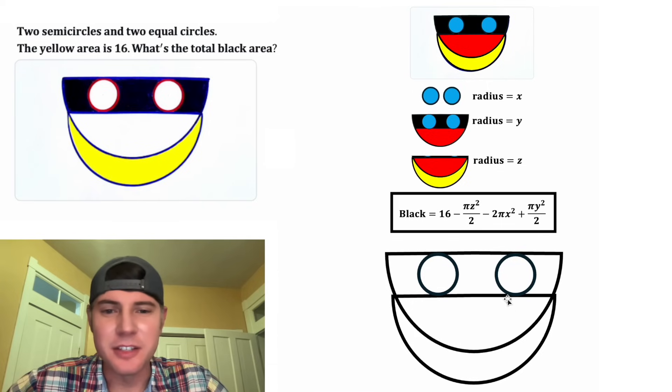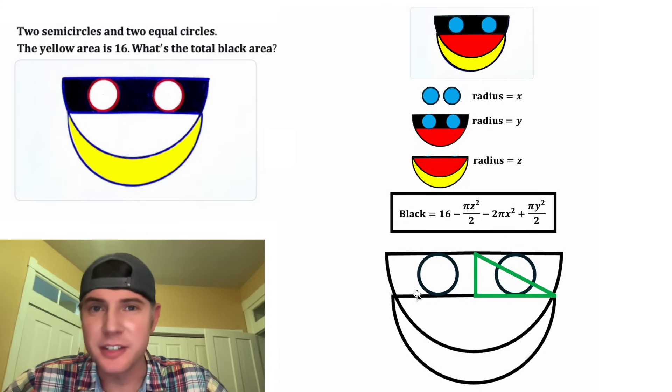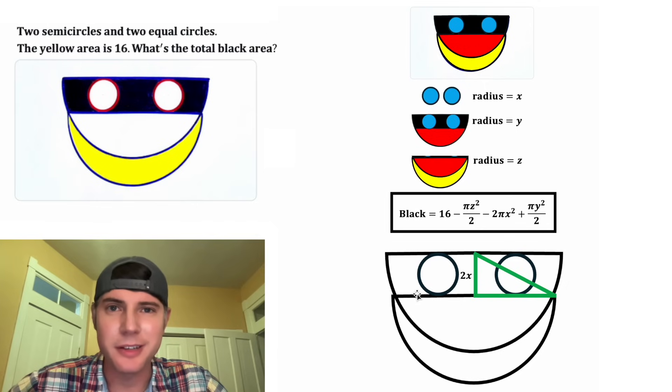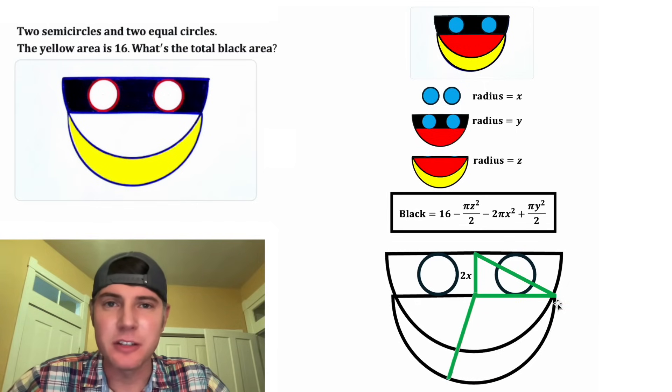Next, let's look at an outline of this thing. And let's draw this right triangle. This left-hand side is the same length as the diameter of this circle. Since the radius is X, the diameter will be 2X. And this bottom side is the same length as the radius of this lower semi-circle. So that'll be equal to Z.